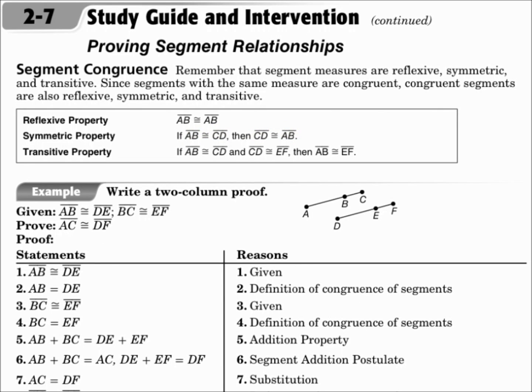The transitive property said if the first is congruent to the second, and the second is congruent to the third, then the first is congruent to the third. All three of these use segment congruence the same way that equality occurs, and all three can be used in proofs.